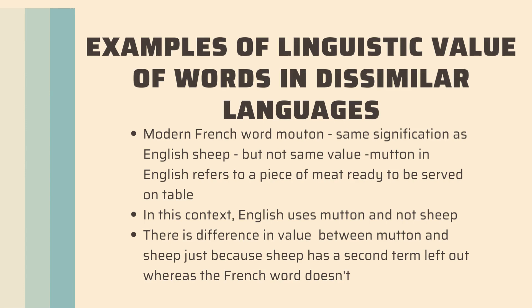Here are examples of linguistic value of words in dissimilar languages. The modern French word 'mouton' has the same signification as the English word 'sheep', but not the same value. 'Mutton' in English refers to a piece of meat ready to be served on a table — English uses 'mutton' and not 'sheep' in that context. There is a difference in value between 'mutton' and 'sheep' because 'sheep' has a second term, whereas the French word doesn't.